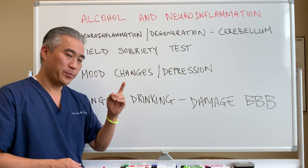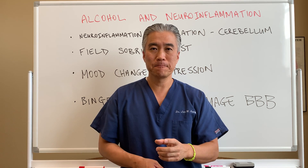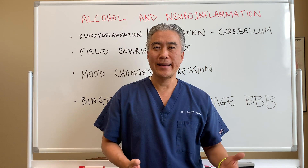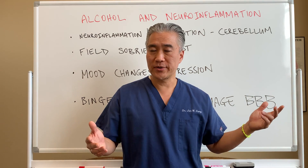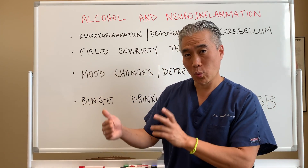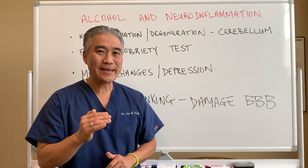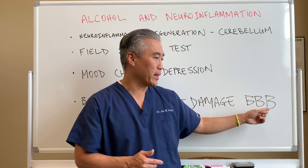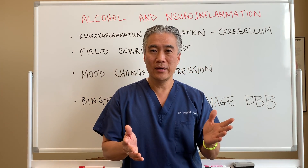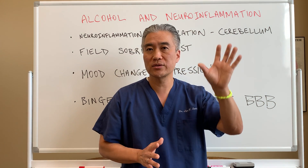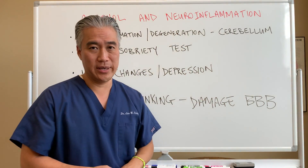Binge drinking versus drinking one or two glasses of wine can do more damage to the brain. For example, you could have one or two beers a night for seven days and be fine. But if you took those same 14 beers and drank them in one day — binge drinking — the high level of alcohol in your system will break down and damage the blood-brain barrier. All of a sudden, things that should not cross into the brain will cross and create symptoms, especially with the cerebellum.